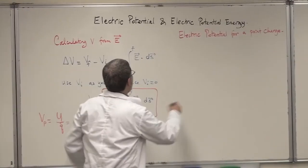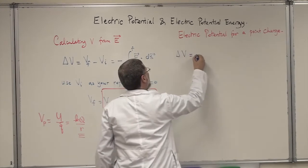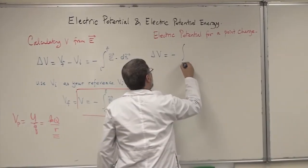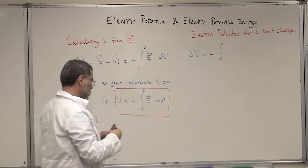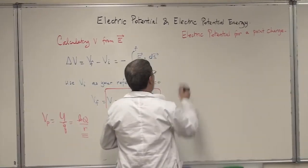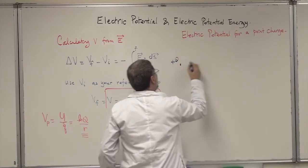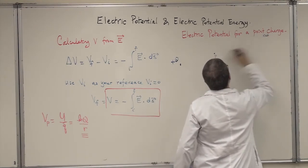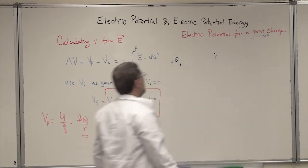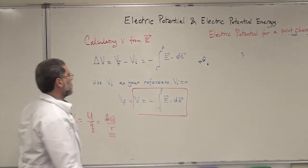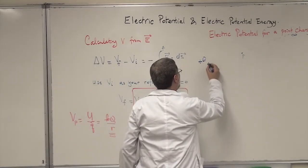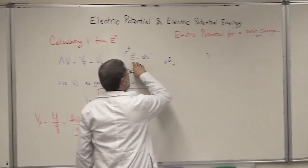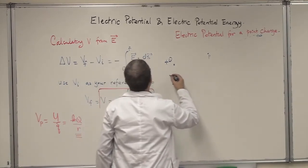So we start from this equation: delta V equals minus integral of E dot dS. Before I do this, I'm going to draw: I have a charge here, plus Q for example, and I'm going to go from a point P to infinity. So my charge Q is going to produce an electric field here, and that electric field is very well known. Therefore I'll do my integration.